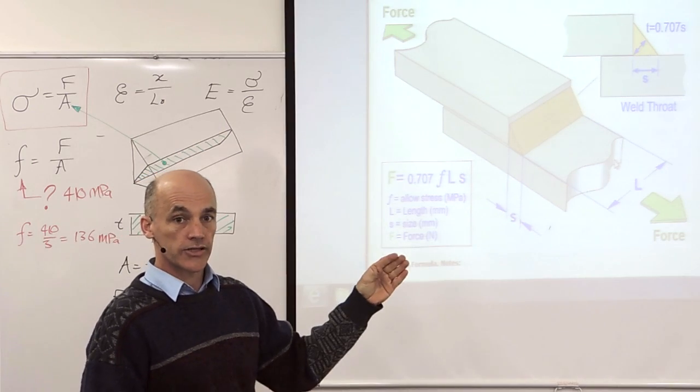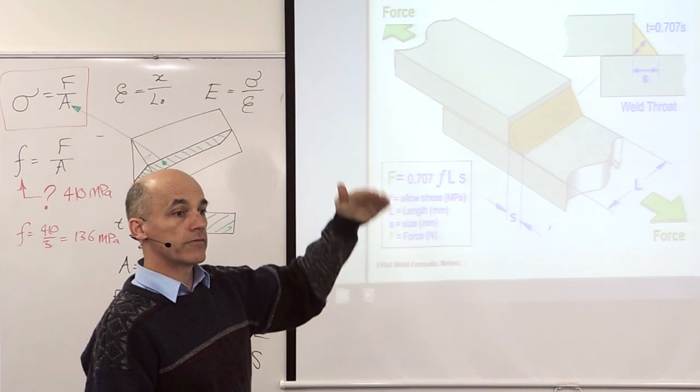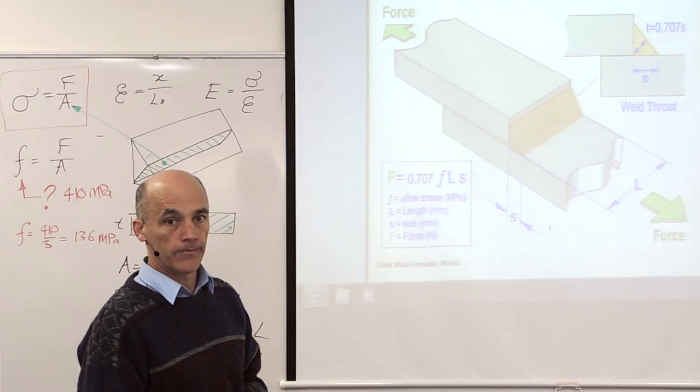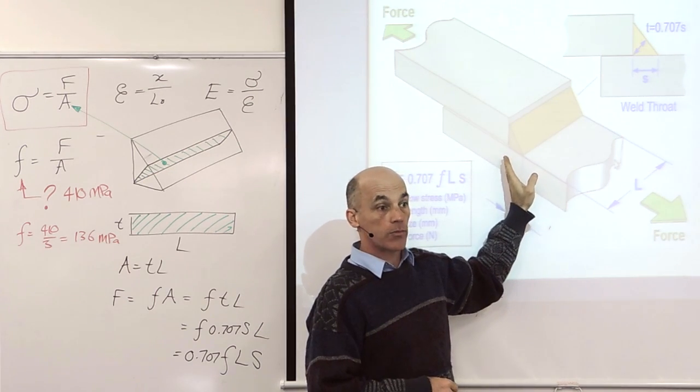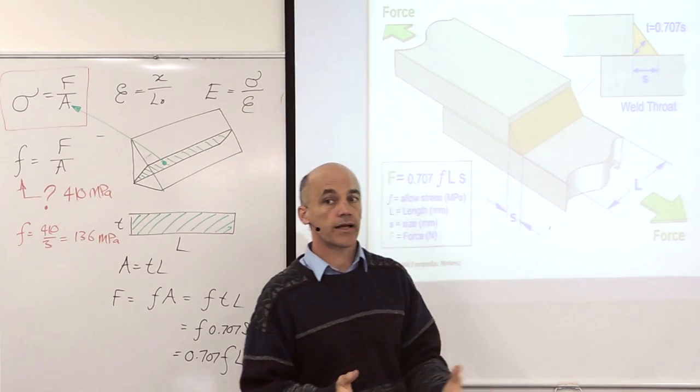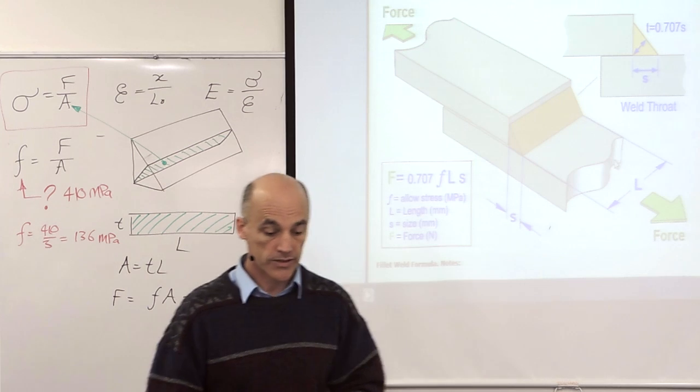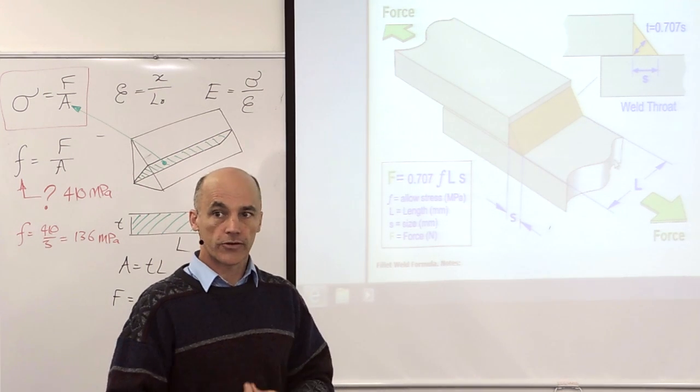Quite often we do a calculation, double check it, and then we round it up to the next number that they're using in the workshop. Quite often in a design they want to weld all the way around so that water can't get in or something like that. In which case the weld could be 10 times stronger than necessary.